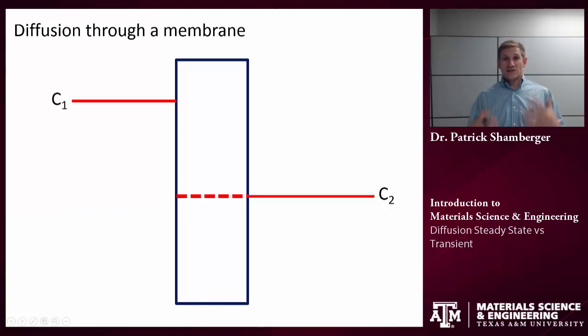So what happens if the system changes? Say I start flowing a gas on the left-hand side, and that gas has a different concentration of hydrogen in it. I know immediately I have a higher concentration of hydrogen off to the left than I do on the right. So I'm going to have some sort of diffusion of hydrogen from the left to the right. How's that going to change with time?